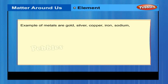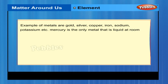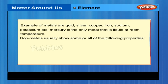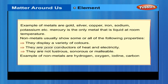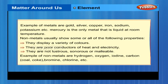Examples of metals are gold, silver, copper, iron, sodium, potassium, etc. Mercury is the only metal that is liquid at room temperature. Non-metals usually show some or all of the following properties: they display a variety of colors and are poor conductors of heat and electricity, and they are not lustrous, sonorous, or malleable. Examples of non-metals are hydrogen, oxygen, iodine, carbon, coal, coke, bromine, chlorine, etc.